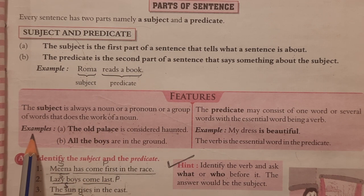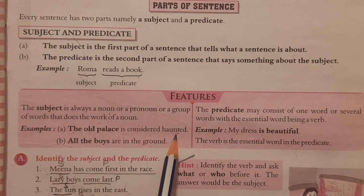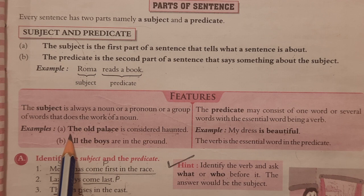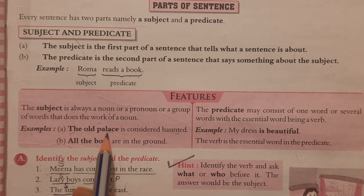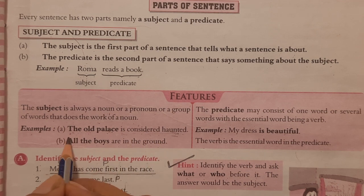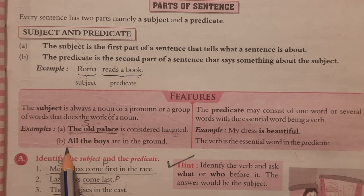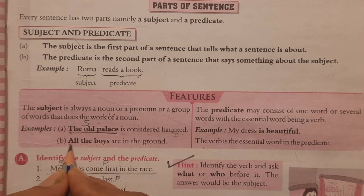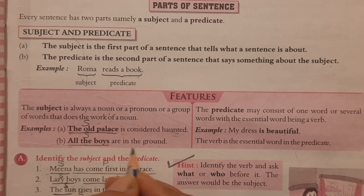For example, 'The old palace is considered haunted.' We are talking about the old palace — that is the subject. What about it? 'Is considered haunted' — that is the predicate. Moving on to the next example: 'All the boys are in the ground.' Here, 'all the boys' is the subject and the rest is the predicate.